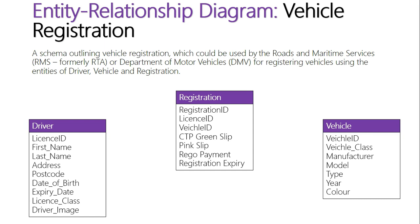For the vehicle entity we have: vehicle ID, class, manufacturer, model, type, year, and color. For registration, there is a registration ID as its primary key, with license ID and vehicle ID as foreign keys to connect the other two entities. Pink slip, rego payment, and CTP green slip are all things that need to be pre-approved before rego can take place, and then registration is given an expiry date for when rego needs to occur again.